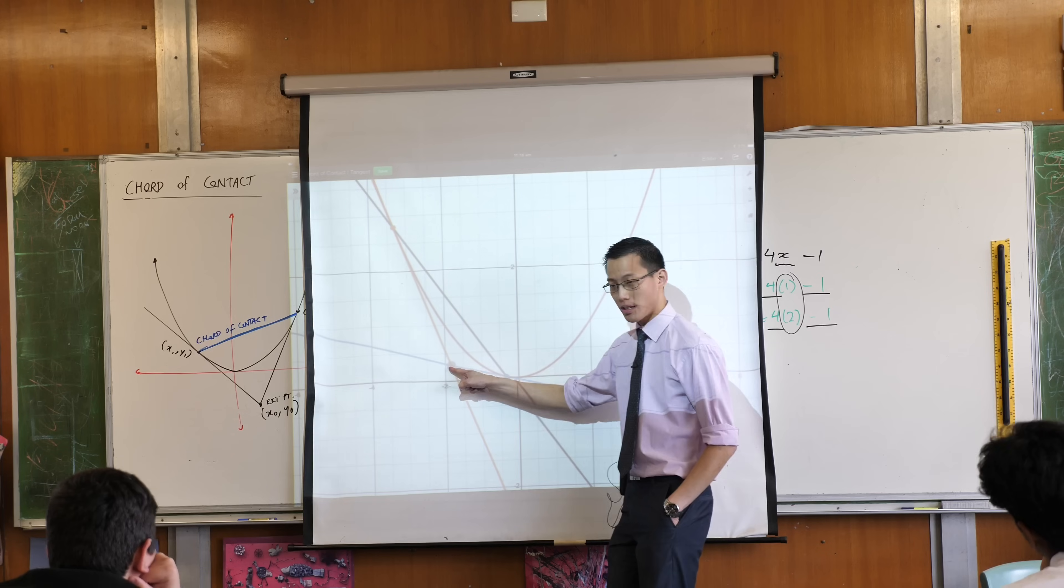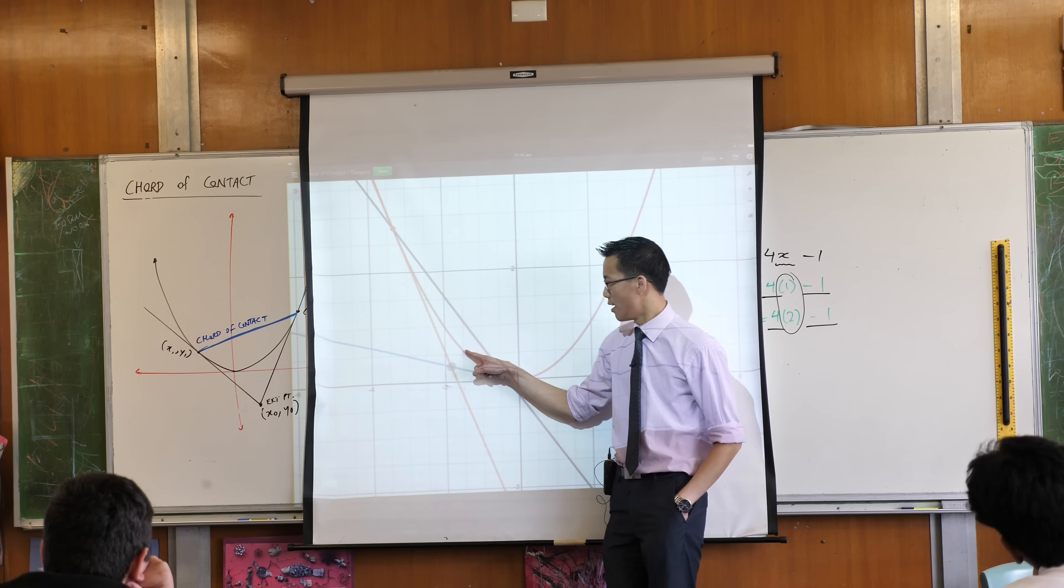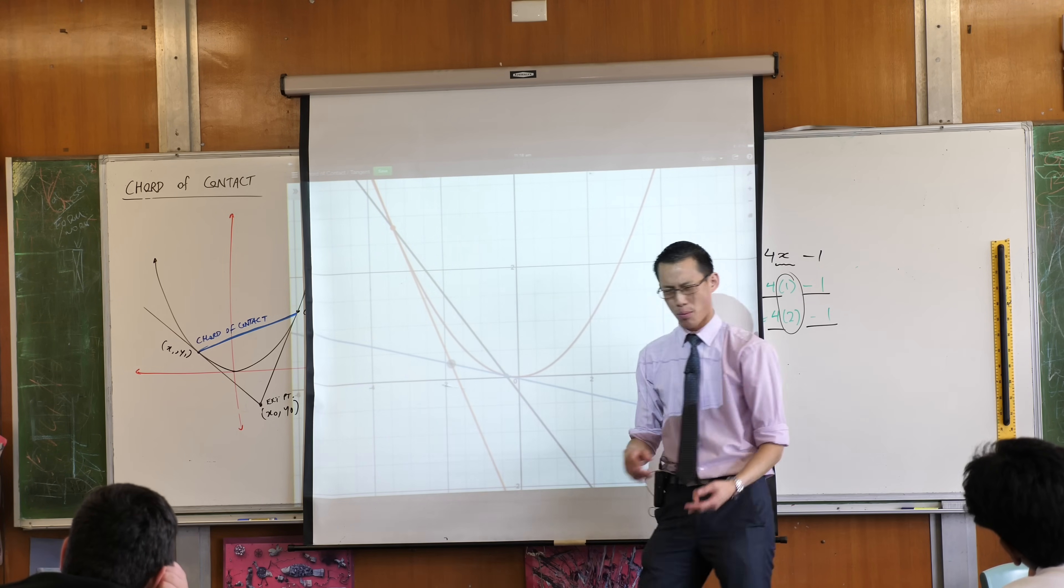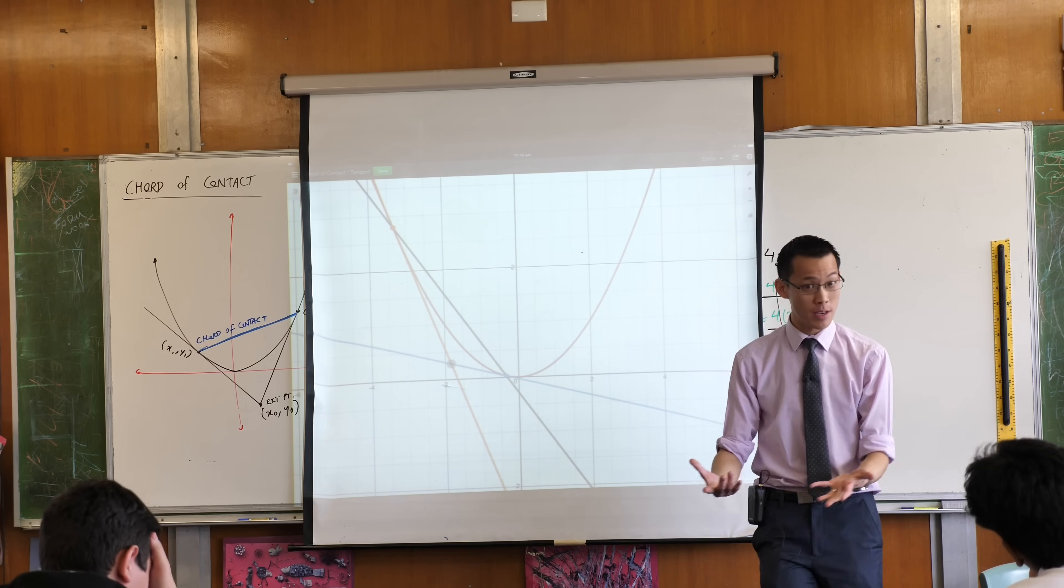Well, if your external point is closer to the parabola, then the other points you're in contact with are also getting closer. If the points are getting closer, their tangents will become more alike. Does that make sense?